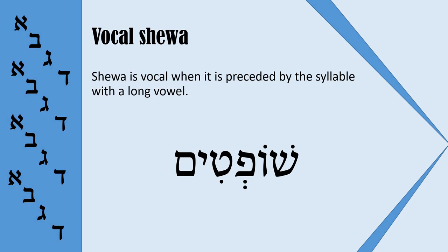For example, the word Shoftim. Here we have a Sheva, and the preceding syllable has the vowel Holam Vav. Holam Vav is a long vowel, which is why Sheva is vocal. We need to read this word as Shoftim.